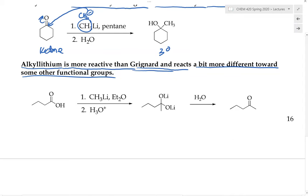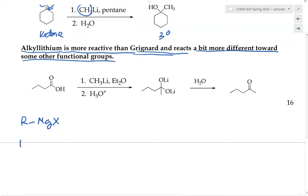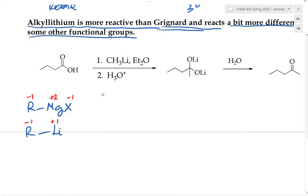Let's discuss why the alkyl lithium reagent is more reactive than the Grignard reagent. When we have the Grignard reagent, the carbon is bonded to magnesium and the halide. In comparison, with the lithium reagent, notice the charges: the magnesium is +2, the halide X is −1, so the carbanion is −1. In the case of the alkyl lithium reagent, lithium is +1 and the carbon is −1. In both cases the carbanion charge is negative, but there are some very important differences between the two.